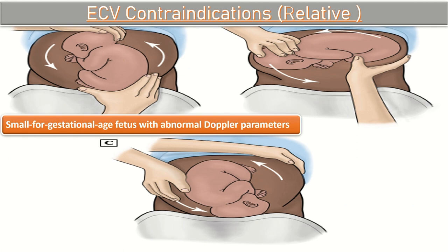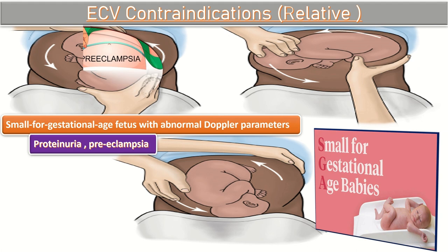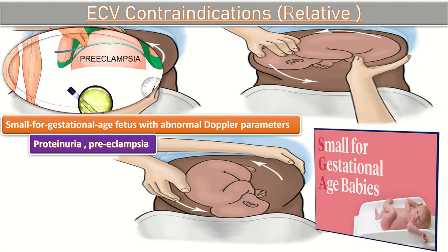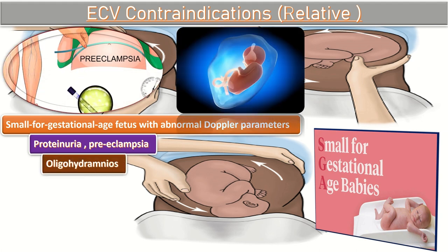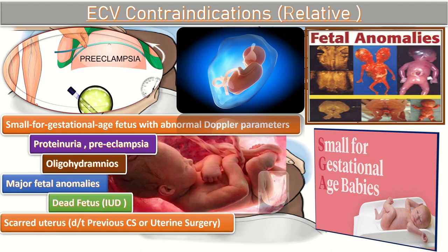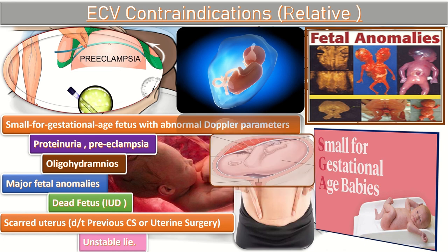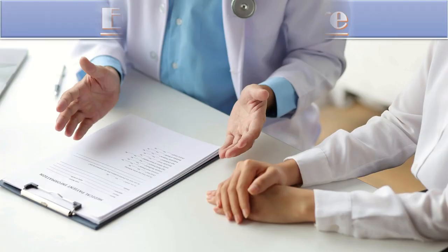What are the relative contraindications of external kephalic version? First, small for gestational age fetus with abnormal Doppler parameters. Secondly, proteinuria and preeclampsia. Thirdly, oligohydramnios. Major fetal anomalies. Dead fetus or IUGR. Scarred uterus due to previous cesarean section or uterine surgery. Or in cases of unstable lie, ECV is contraindicated.